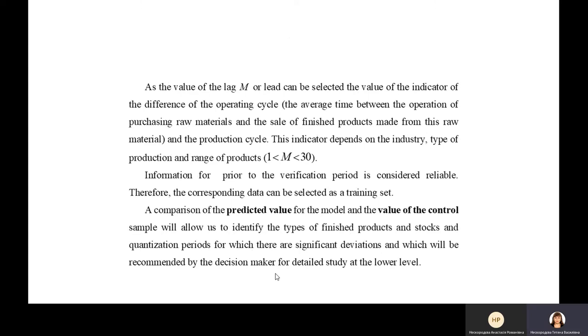As the value of lag M or lead can be selected the value of the indicator of difference of operation cycle and production cycle. This indicator depends on the industry, type of production, and range of products.